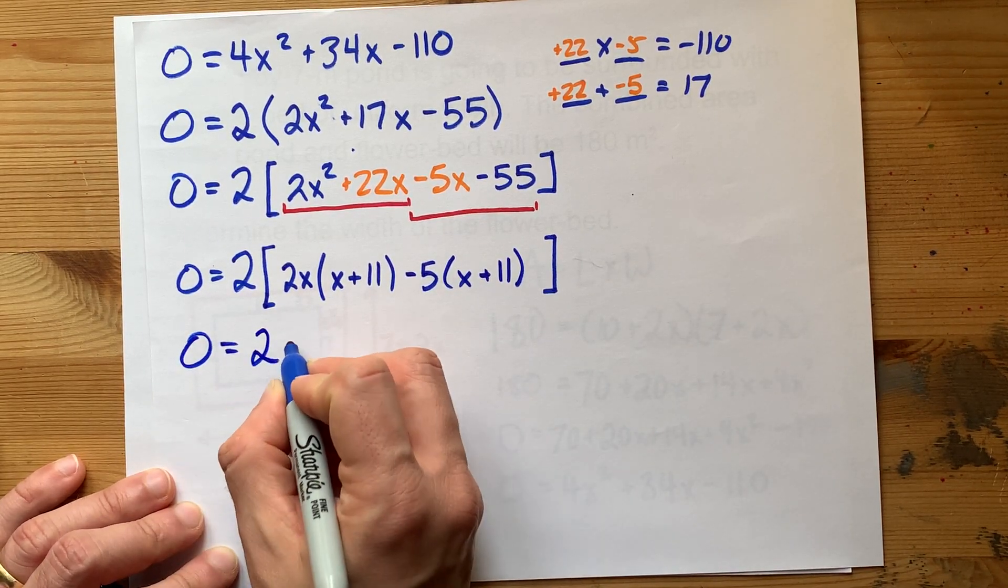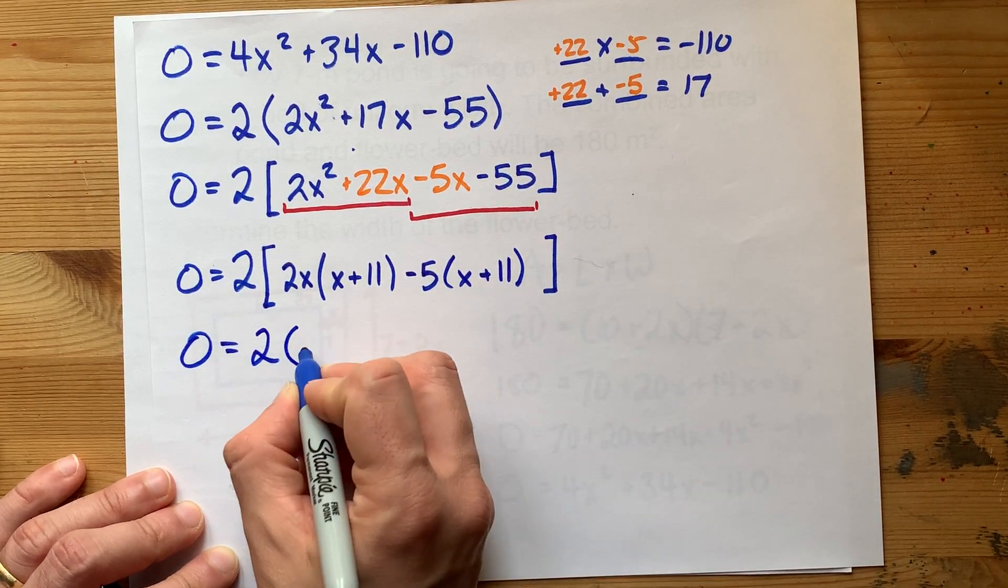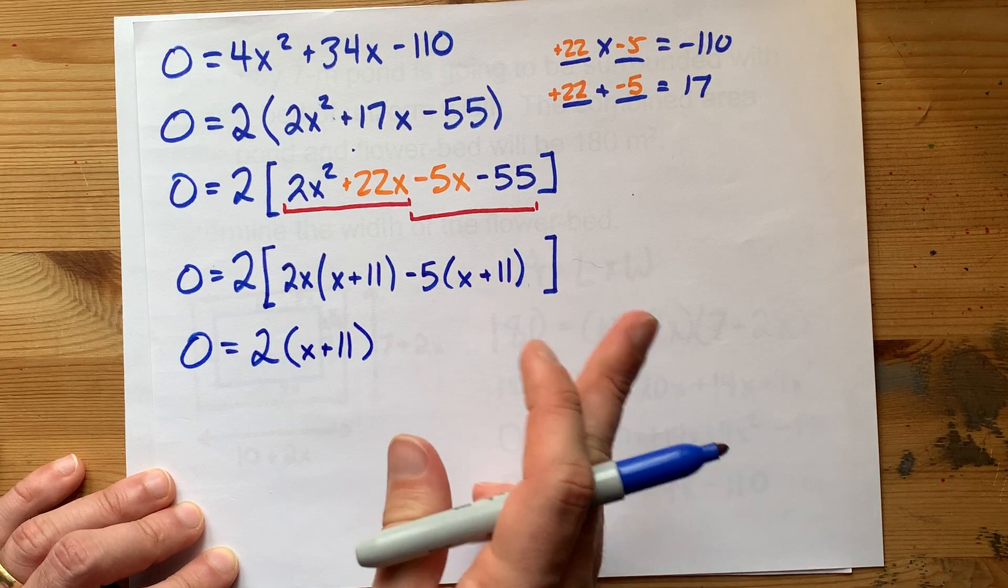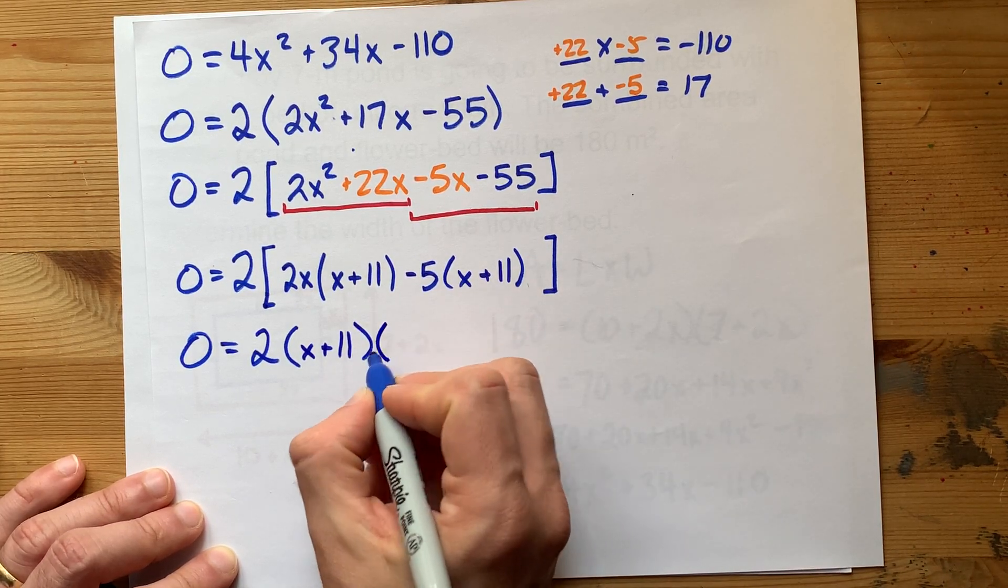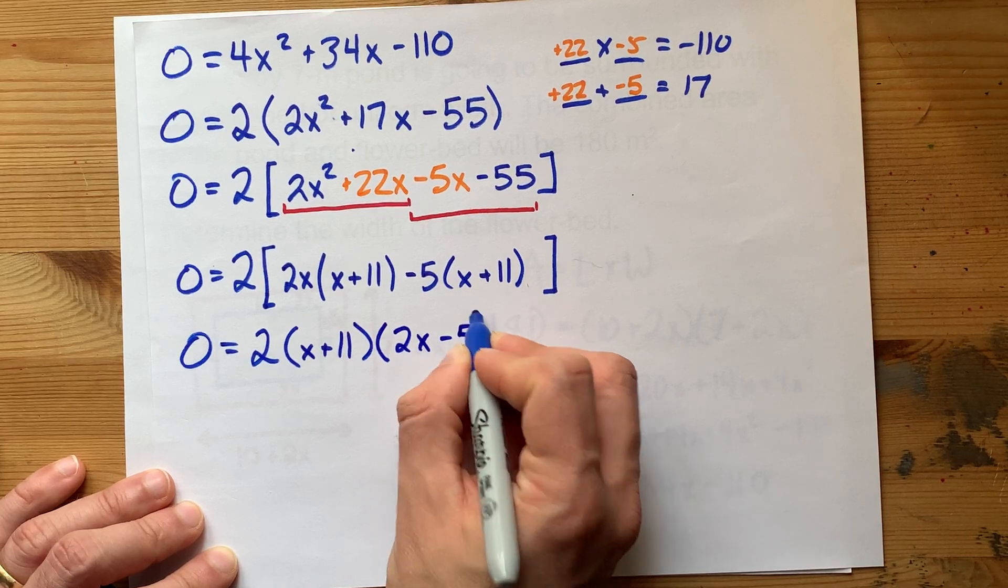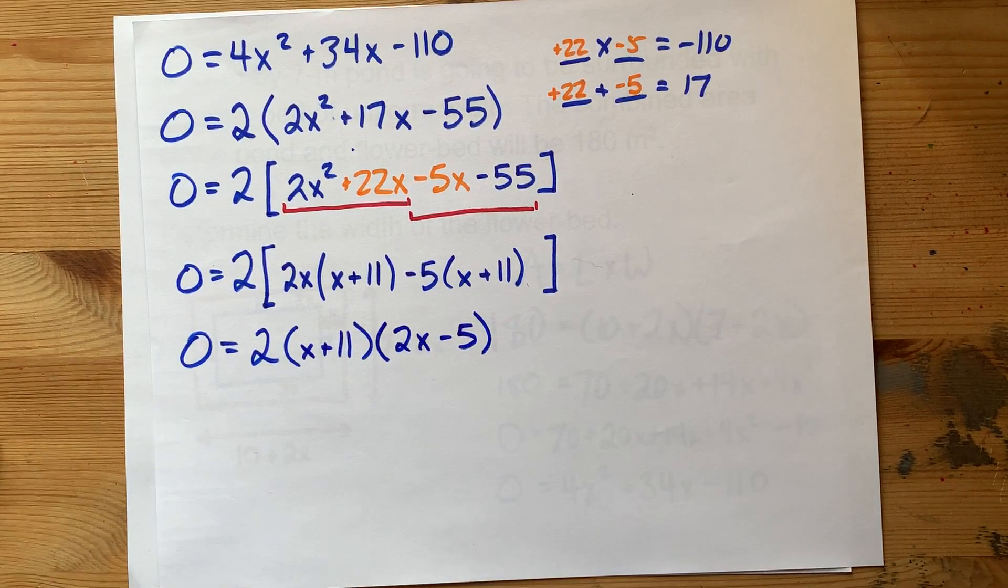So I end up with 2. I'm going to pull x plus 11 out of both of these two terms and put my leftovers into another bracket. That's 2x minus 5. So I've now factored this.